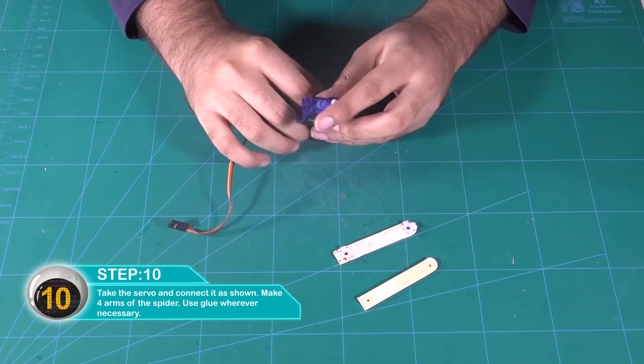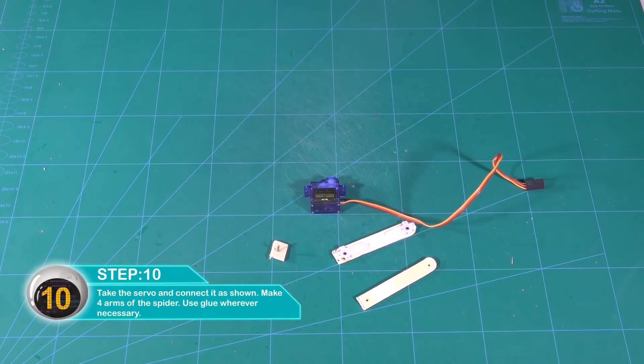Take the servo and connect it as shown. Make four arms of the spider using glue wherever necessary.